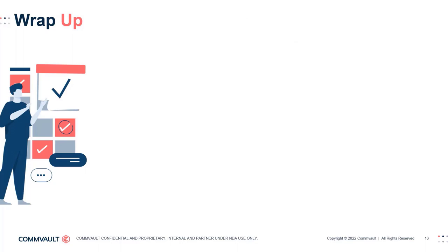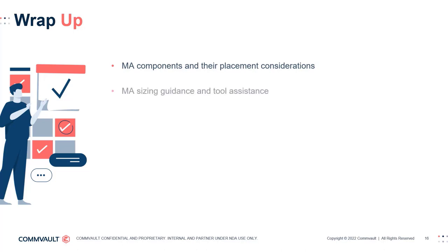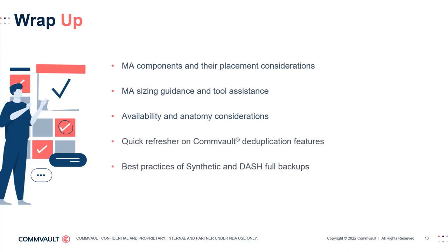In the span of this module, we've covered: 1. The pieces that make up a media agent along with placement examples that mitigate common design factors. 2. Properly sizing media agents and the Commvault Solution Discovery Tool that aids in designing an environment. 3. The anatomy of a common media agent along with availability considerations on how recovery works when losing a key media agent item like a deduplication database and index cache. And lastly, a refresher on deduplication and how it works with DashCopies, highlighting key differences between synthetic full and Dash full operations. Thank you for watching.